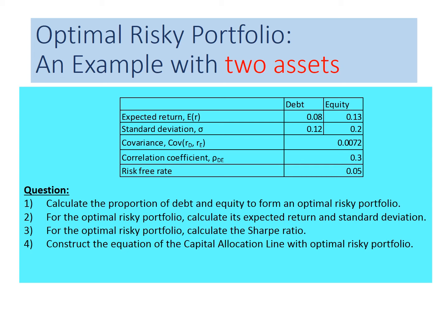Let's look into an example. In this example, there are two assets: debt and equity. The expected return and standard deviation of debt and equity are given in the table. Equity has higher expected return and risk as compared to debt. The covariance and correlation between debt and equity are also given in the table. The risk-free rate is 5%. Our objective is to form an optimal risky portfolio using these two assets and determine the weight of investment in each asset, then calculate the expected return, variance, standard deviation, and Sharpe ratio for the optimal risky portfolio.